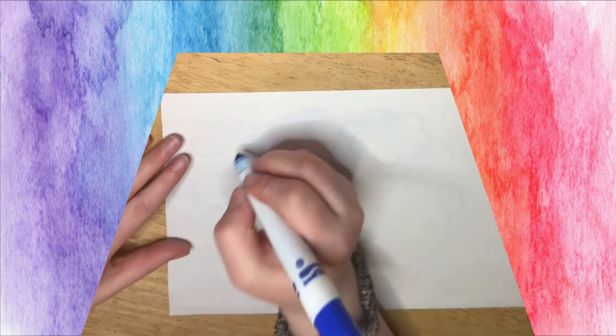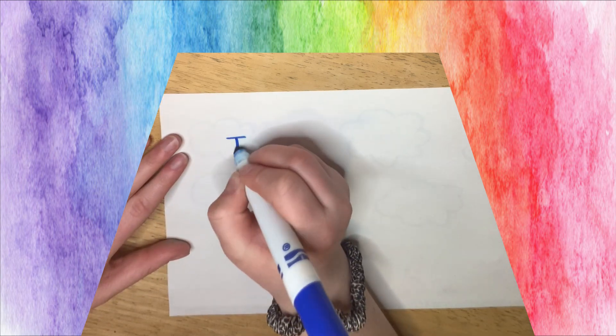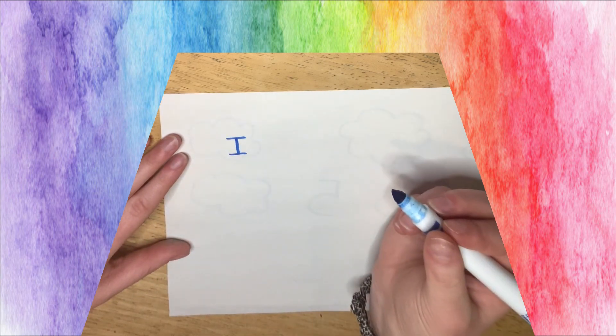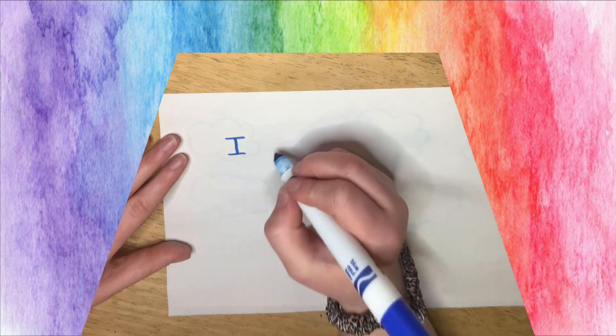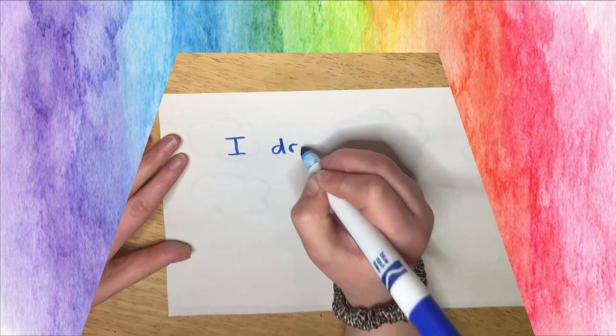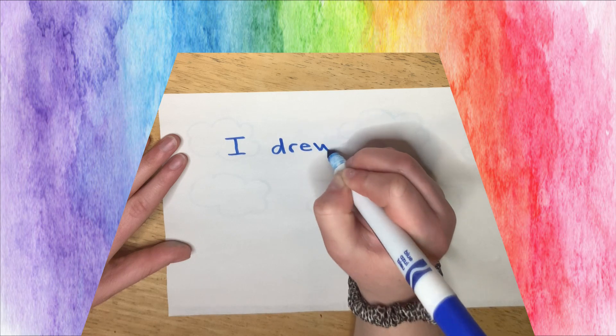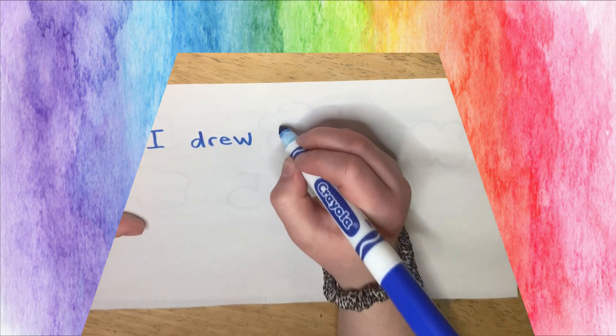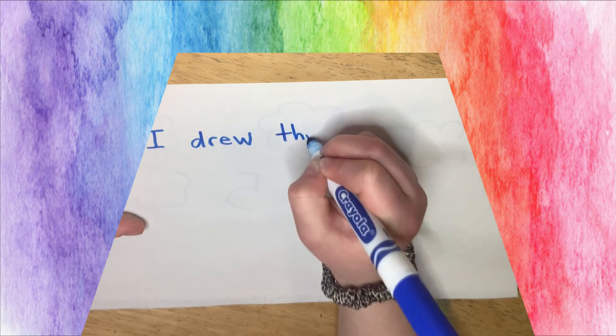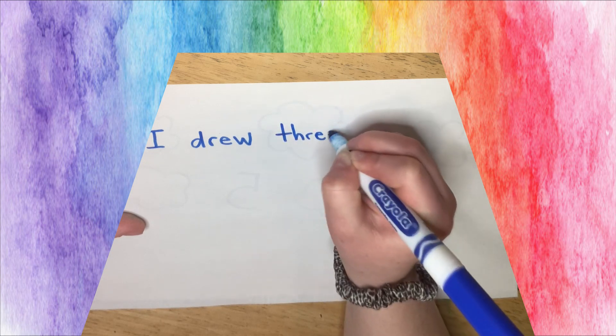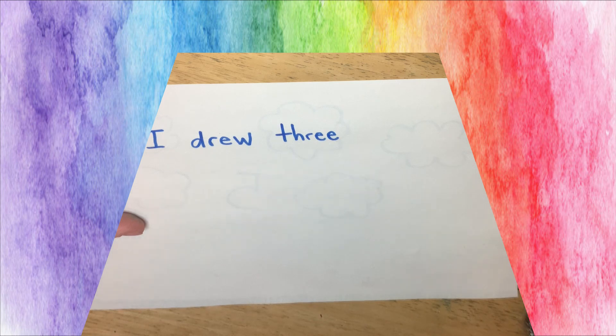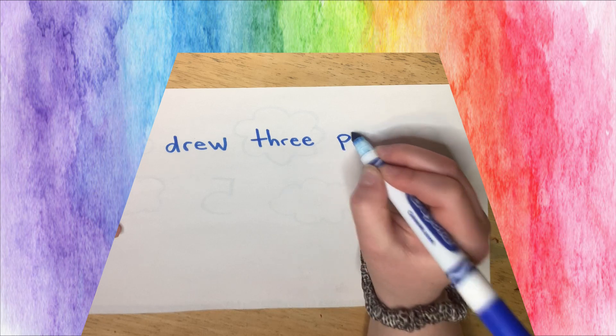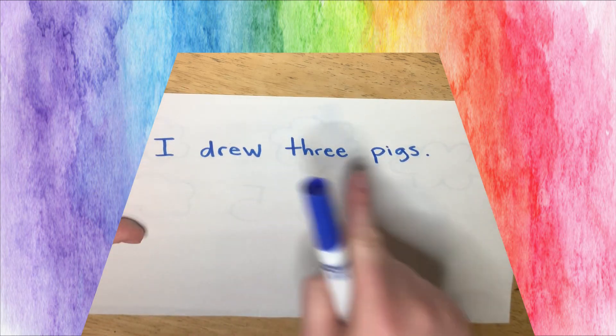So we're going to write, I, what did you do? You drew, how many pigs? Three, and what animal did you draw? That's right, pigs. I drew three pigs.